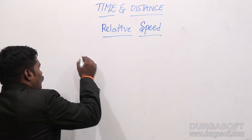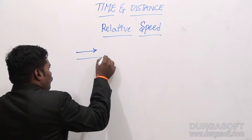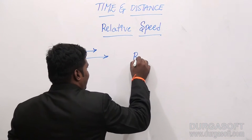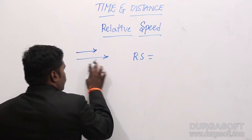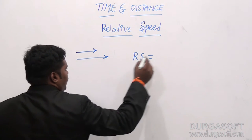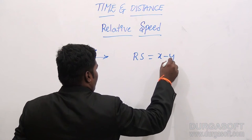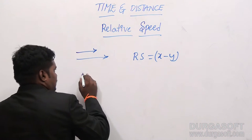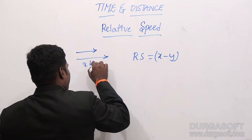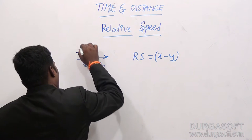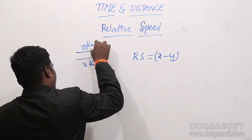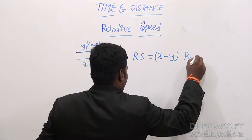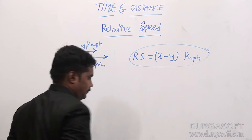If they are moving in the same direction with different speeds, the relative speed is equal to x minus y, where x is the faster speed and y is the slower speed, both in kilometers per hour. This is the relative speed formula for same direction.